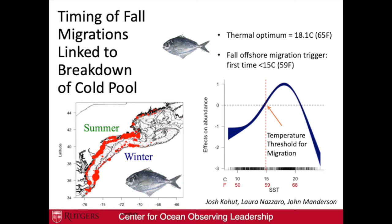Here's the butterfish example — work done by Josh, Laura Mazzaro, and John Anderson. In summertime, butterfish are really near shore; then they move offshore in wintertime. The timing of that migration is dictated by cold pool overturn. Butterfish have a thermal optimum of 18.1°C and a fall offshore migration trigger at 15°C. Using a GAM model on the nearshore fisheries survey, they could see abundance basically drops once near-shore temperatures reach 15°C or below. You won't find any butterfish in the nearshore system below 15°C — a really interesting study showing the exact temperature at which they're completely gone.